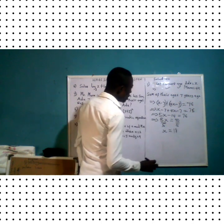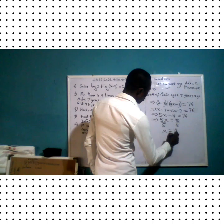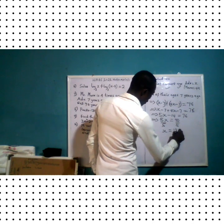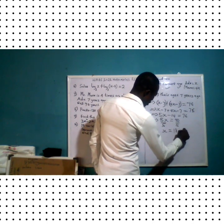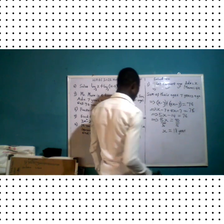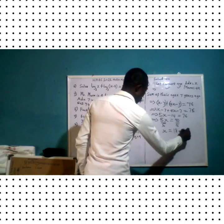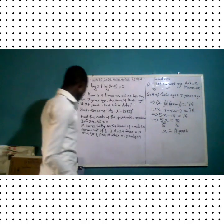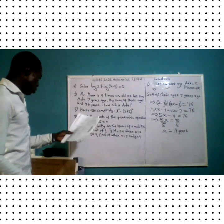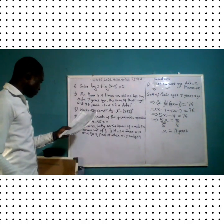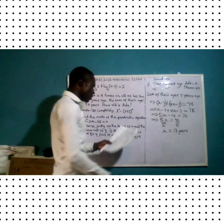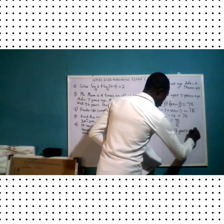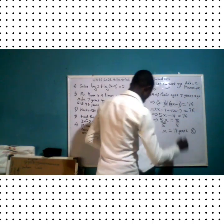So Adu's age is 18 years old. If you look at the options, that is option C — option C is the correct option.